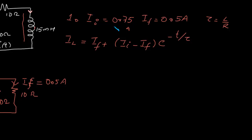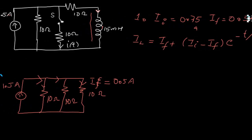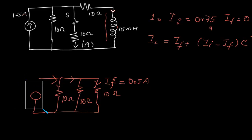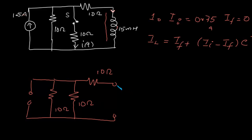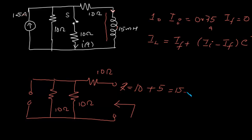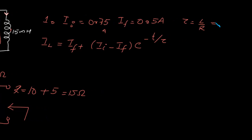Now we find the time constant of the circuit. To find the Thevenin resistance, we open circuit any current source. Looking into the terminal, there is a 10 ohm resistor in series with the parallel combination of 10 ohm and 10 ohm. That parallel combination equals 5 ohm, so the Thevenin resistance is 10 plus 5, equal to 15 ohm. The time constant tau equals 15 times 10^-3 divided by 15, which gives 10^-3 seconds, or 1 millisecond.